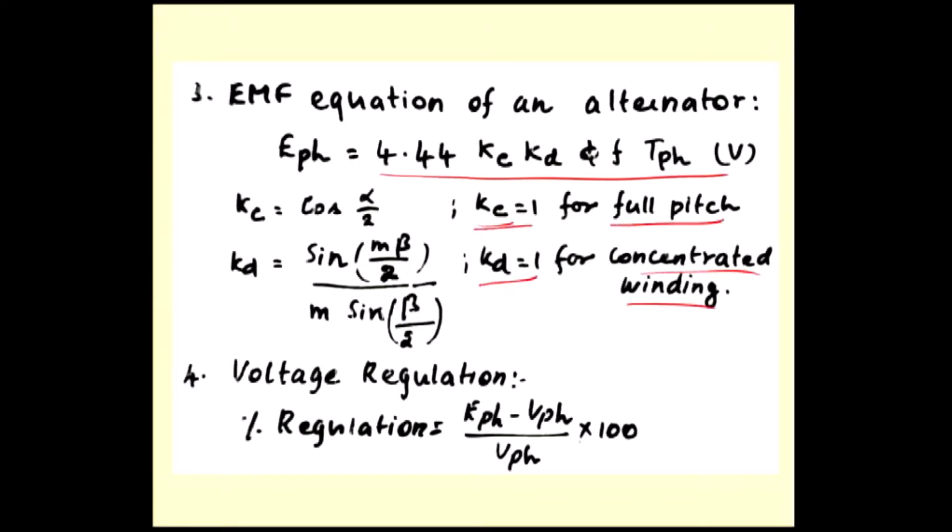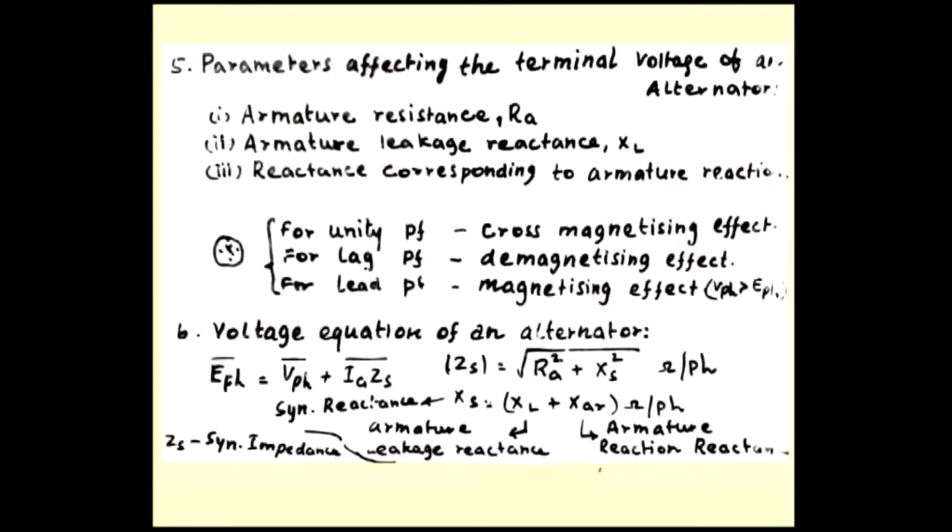Then next we discussed the voltage regulation: E phase minus V phase divided by V phase. Any alternator, the terminal voltage is supposed to be constant from no load to full load. But in practical case, the alternator terminal voltage decreases. What are all the factors affecting the terminal voltage of the alternator?